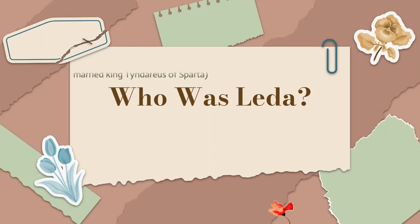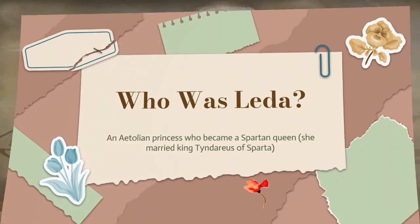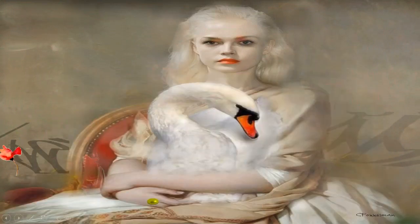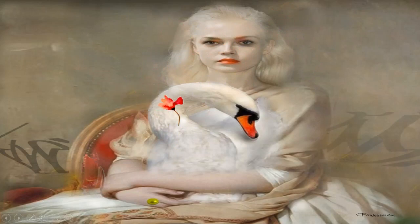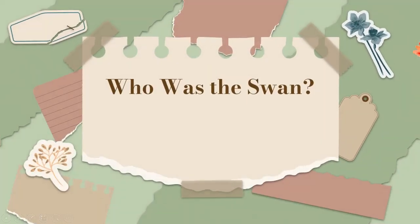The first question to ask is: who was Leda? Leda was an Italian princess who became a Spartan queen; she married King Tyndareus of Sparta. This picture shows Leda and the swan together, and you can see how the features of the swan's face are somehow represented in the features of Leda's face. And who was the swan? The swan who affected Leda to that extent is Zeus.